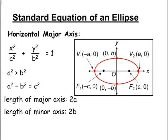Standard equation of an ellipse — horizontal form: the major axis is along the x-axis and the minor axis is along the y-axis. The vertices are at (a, 0) and (−a, 0), and the foci are at (ae, 0) and (−ae, 0). The standard equation is x² / a² + y² / b² = 1, where a² > b². For example, x² / 25 + y² / 16 = 1 gives a² = 25, a = 5, b² = 16, b = 4, and since 5 > 4 we have a > b. The length of the major axis is 2a, the minor axis is 2b, and c² = a² − b².